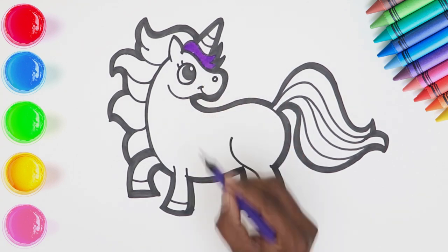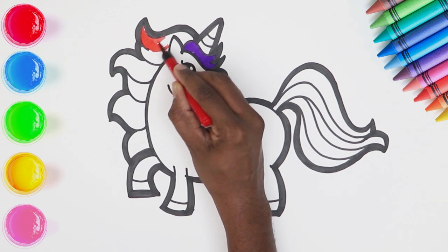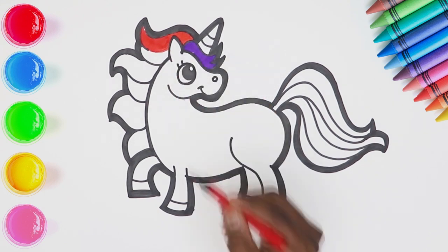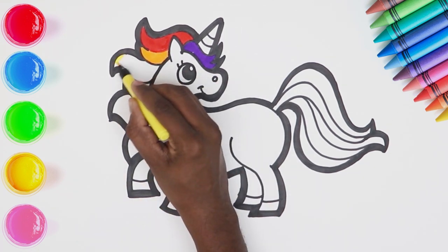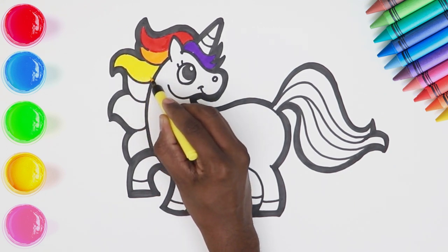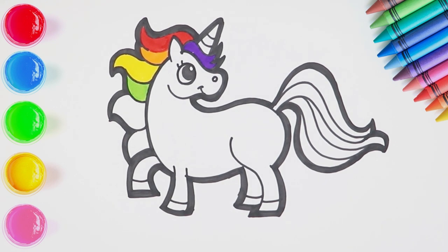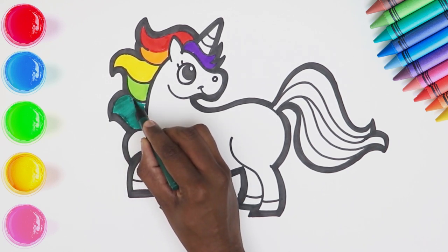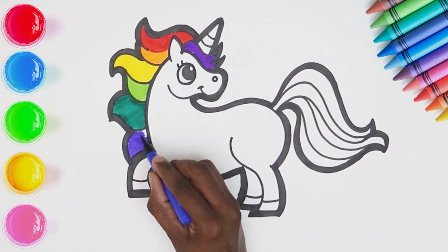Let's colour in! First comes purple. Then red for the mane. Orange. And some yellow too. A lovely green. A darker green too. And lastly purple. How beautiful does our unicorn look?